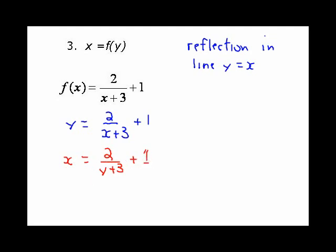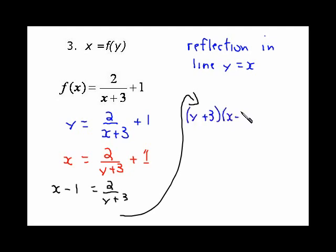Then we isolate the new y. I'll subtract the 1 away from both sides, so x minus 1 equals 2 over y plus 3. I'm going to do this on the same page. Then I'm going to multiply both sides by y plus 3, or cross multiply if you like, so it becomes y plus 3 in brackets, multiplied by x minus 1, equals 2.